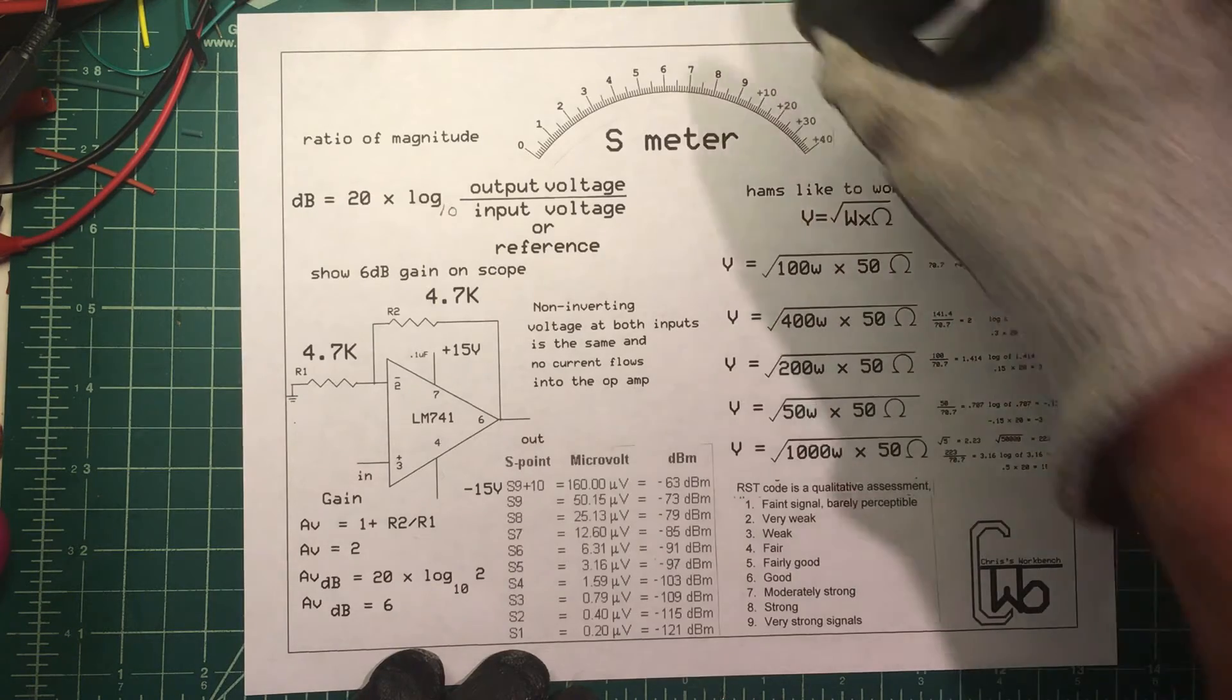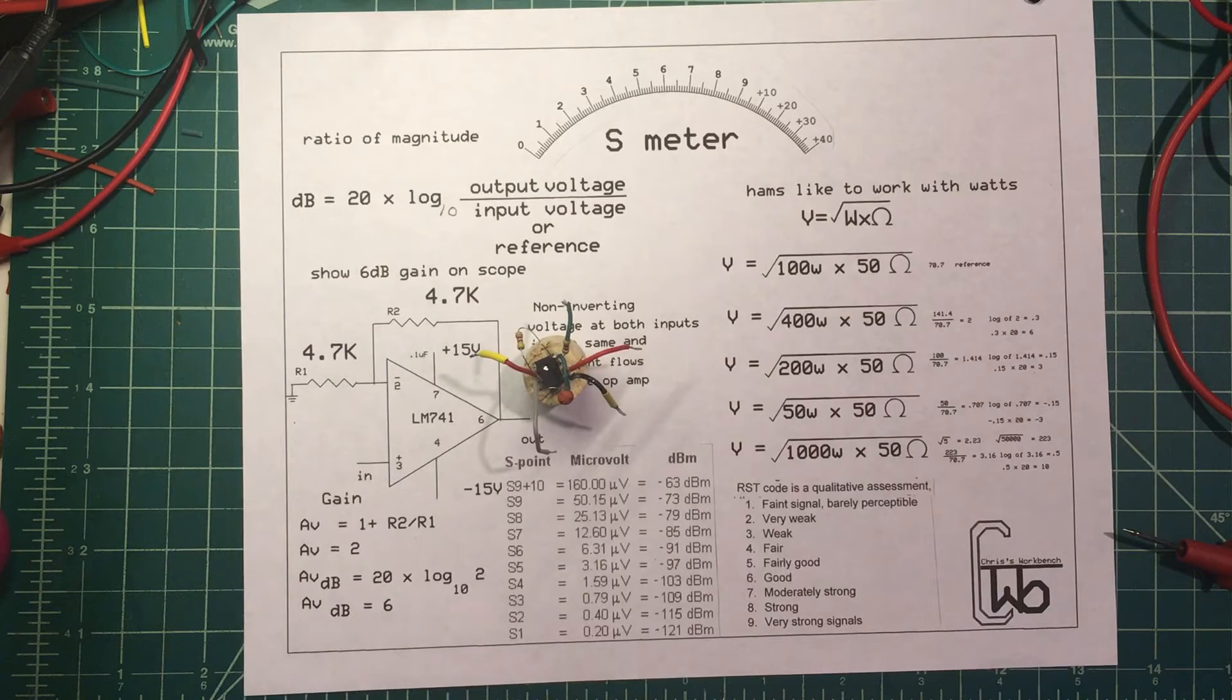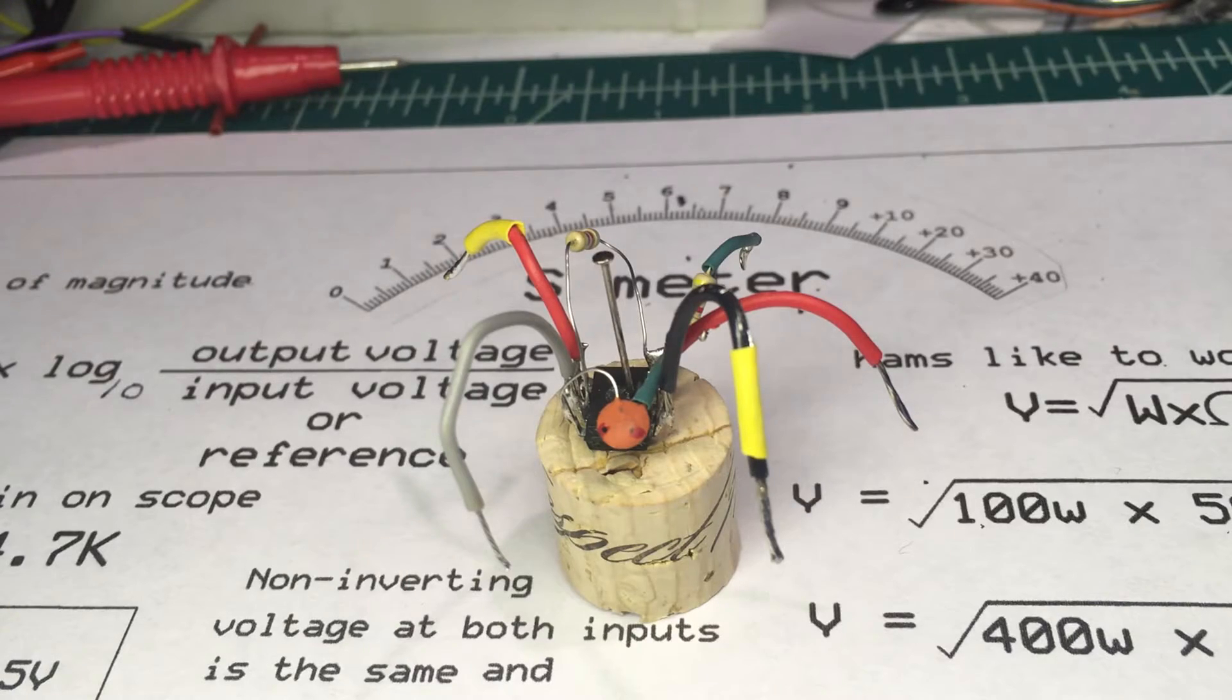Now I put the circuit together dead bug style. Here it is, here. I'll give you a close-up of that. The capacitor is from pin 5 to pin 2. It's a little unorthodox - 5 is an offset null and 2 is the ground.